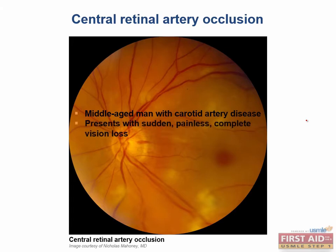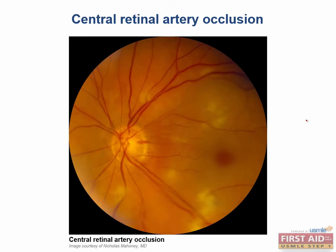On the fundoscopic exam you see pallor of the optic disc, as seen here. You might also see what's called boxcar segmentation of blood in the retinal veins. In addition, you may see a cherry red spot of the fovea, because the retina is quite thin at that location. An example of that is seen here.